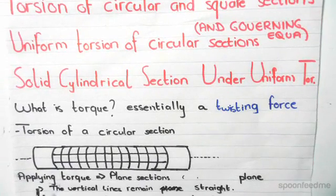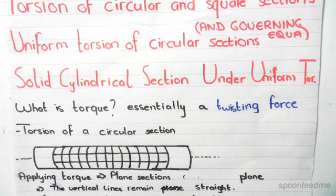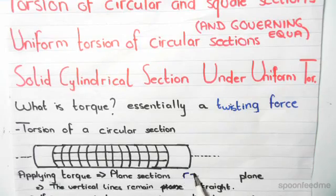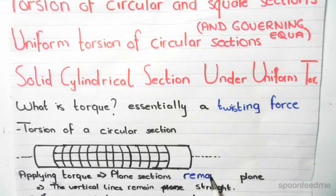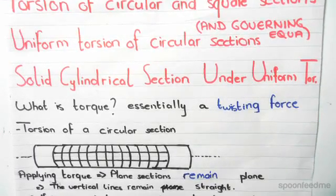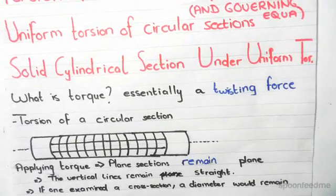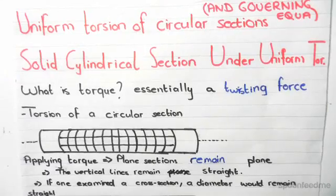The difference is if we apply torque, plane sections always remain plane. So for a circular cylinder, plane sections remain plane, the vertical lines remain straight, and if one examined the cross section, the diameter would be straight.